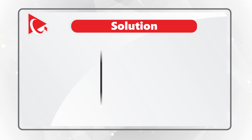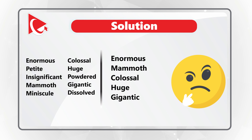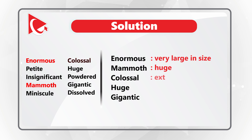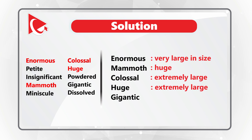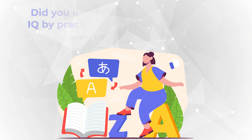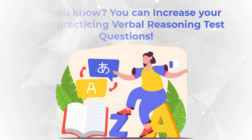I found five words that are similar in meaning to the word 'large.' The words enormous, mammoth, colossal, huge, and gigantic are similar in definition to 'large.' Enormous means very large in size. Mammoth means huge. Colossal means extremely large. Huge has a similar meaning of extremely large. And gigantic means an item of a very large size. Practicing questions like this not just helps you increase your English vocabulary, but also increases your IQ.